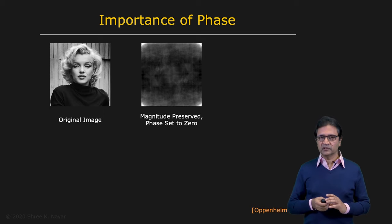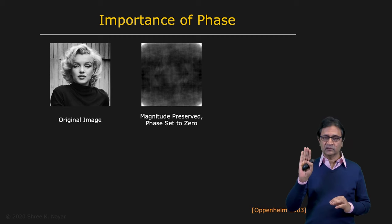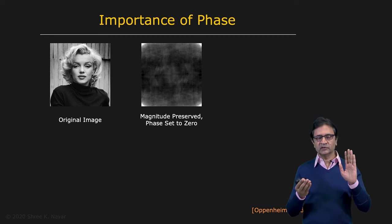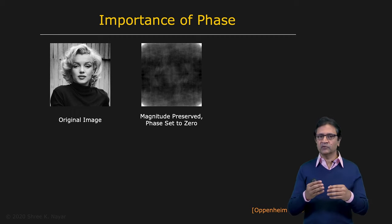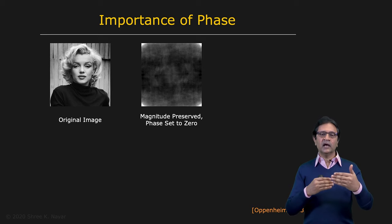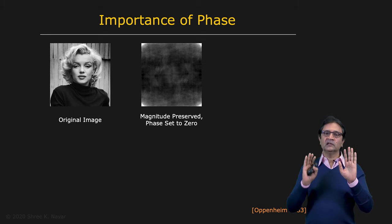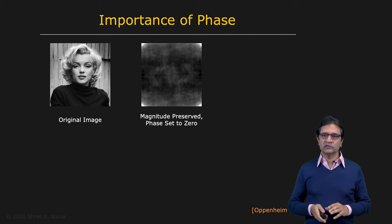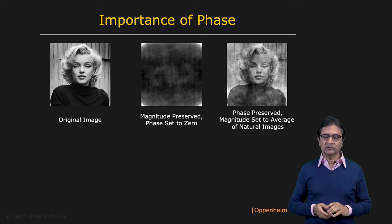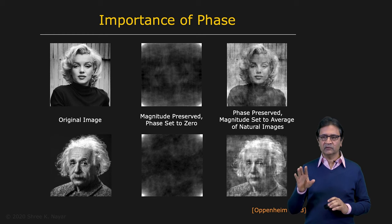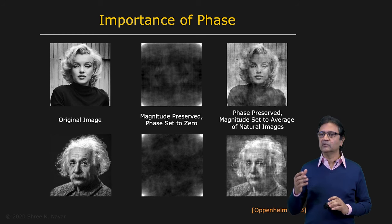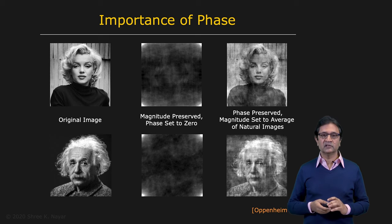Now we do the opposite: keep the phase but replace the magnitude. Since setting magnitude to zero would give a black image, we take a bunch of natural images of landscapes, pets, people, cars, etc., find their Fourier transforms, and take the average of their magnitudes — images that have nothing to do with Marilyn Monroe. We use that as the magnitude combined with the original phase of Marilyn Monroe, then apply the inverse Fourier transform. You get an image where she is recognizable. The phase is extremely important. The same experiment with Einstein — with phase removed, you get an unrecognizable image; with phase preserved, you clearly see Albert Einstein.